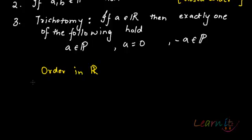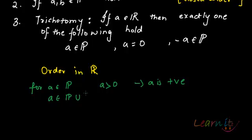...in the positive set. What we learned: for a belonging to P, we write a is greater than zero and call that a is positive. For a belonging to P union zero, we write a is greater than or equal to zero, and a is non-negative. Similarly...